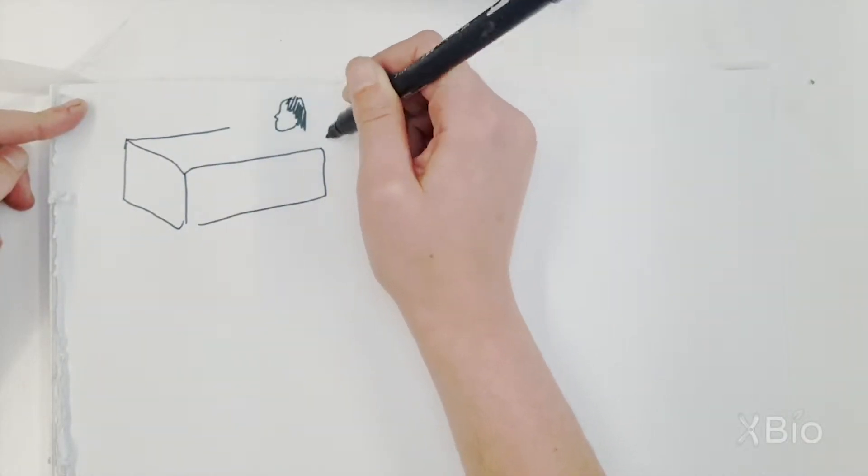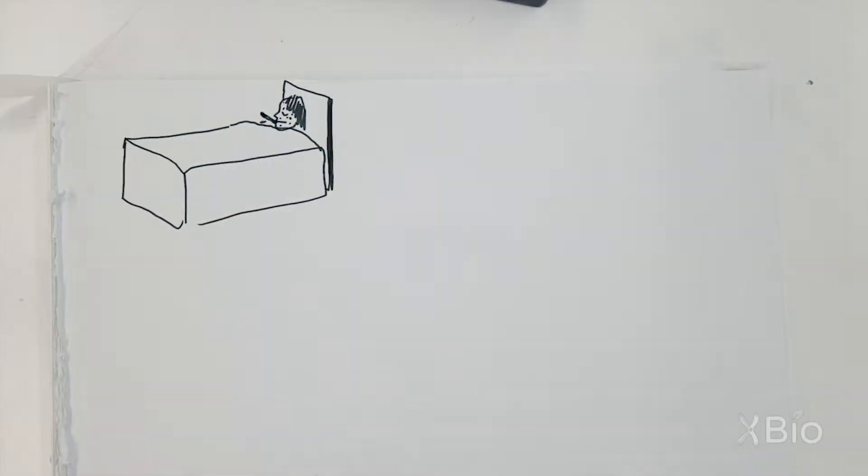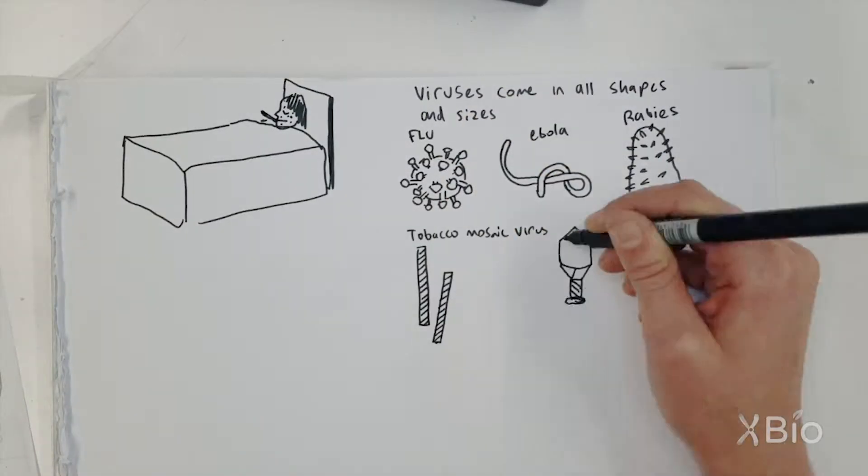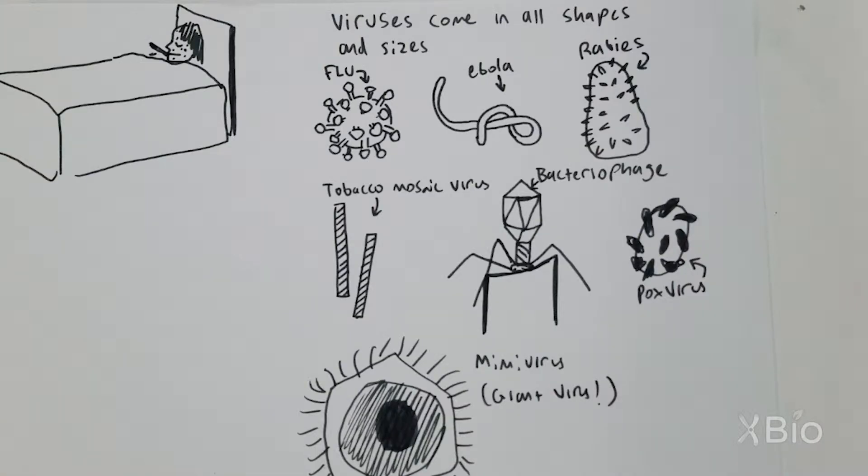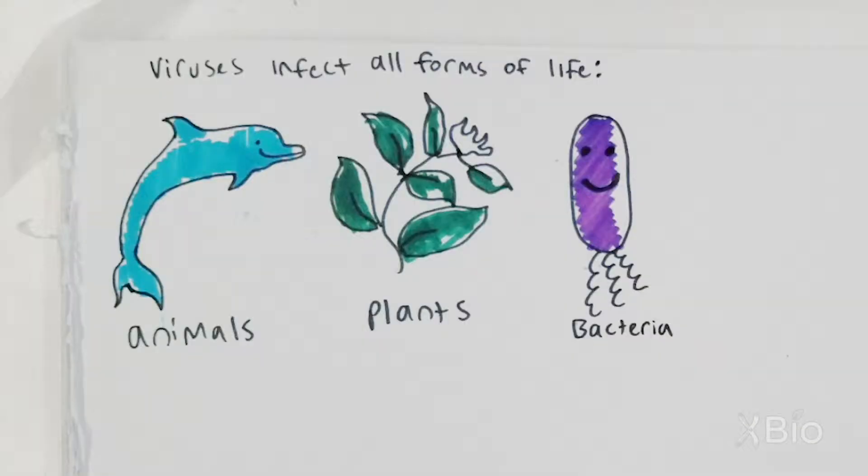We might know about viruses because they can infect us and cause diseases like the flu, herpes, and smallpox. In fact, viruses come in all shapes and sizes and can infect all lifeforms on Earth, including animals, plants, and even bacteria.